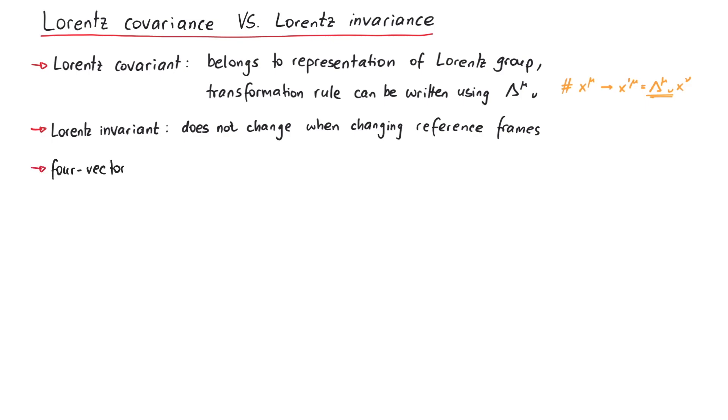The 4 vector we mentioned earlier is Lorentz covariant, since we know how it transforms using lambda mu nu. However, it is not a Lorentz invariant quantity, since it does change.